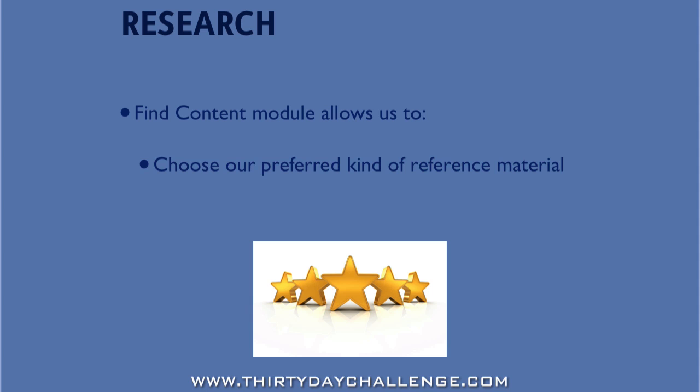Now, if that were all, we could perhaps teach you a few special Google search commands, and in some cases you could find those specific content types. However, the second feature of Market Samurai's Find Content Module is that it enables you to compare and contrast the relative popularity or authority of specific pieces of content that you find. With Market Samurai, not only can you say you want blog posts relevant to your keyword, but when presented with a number of them, you can find the most authoritative, the most popular blog posts from the list.